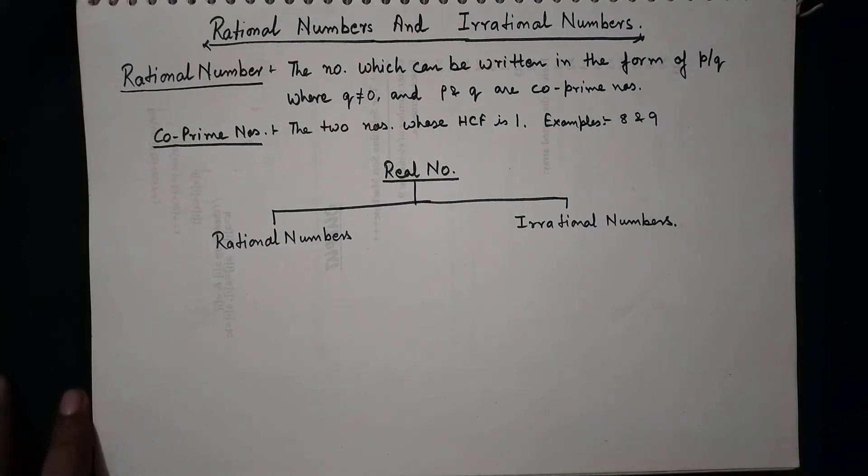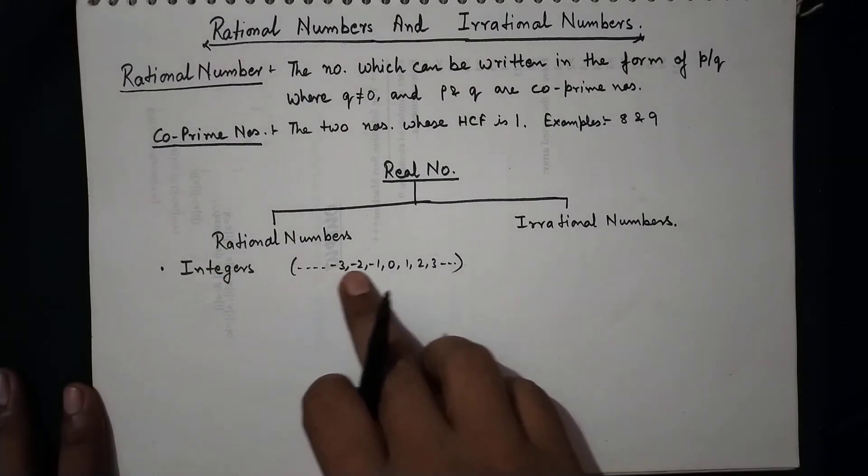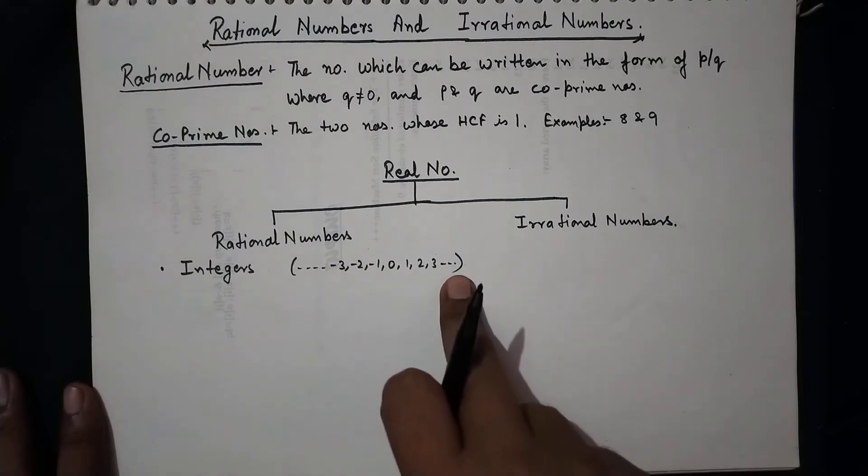Then we go for what is considered in rational numbers. Very first of all, we take the integers. Integers are the set of negative numbers, zero, and all positive numbers.